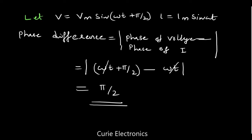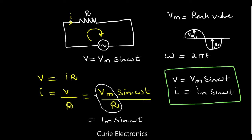Similarly, if you look at our actual equations — V = Vm sin(ωt) and I = Im sin(ωt) — what is the phase difference φ? φ equals 0, or 0 degrees.